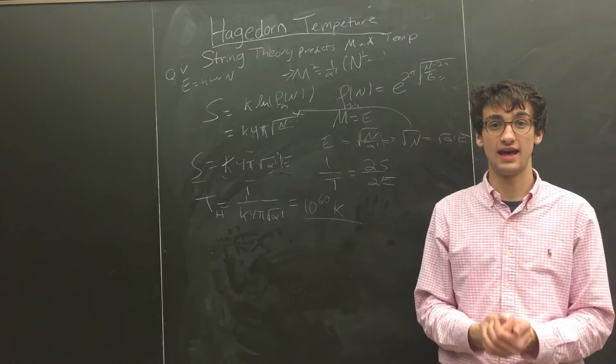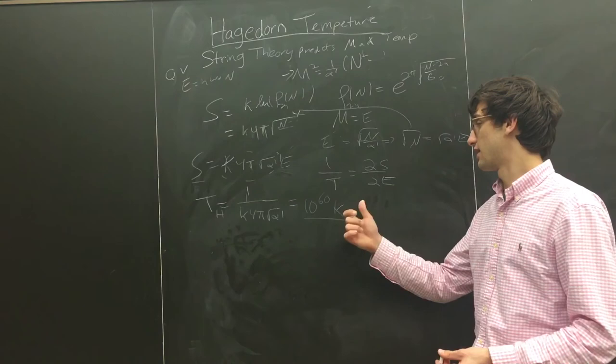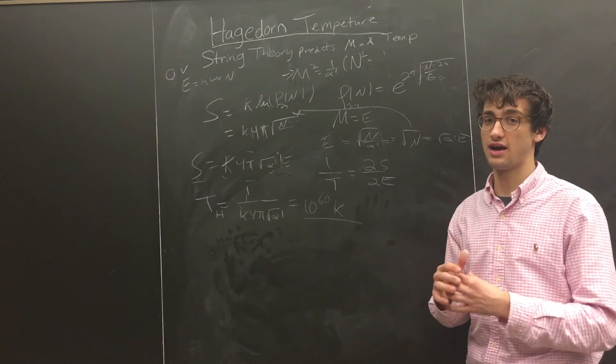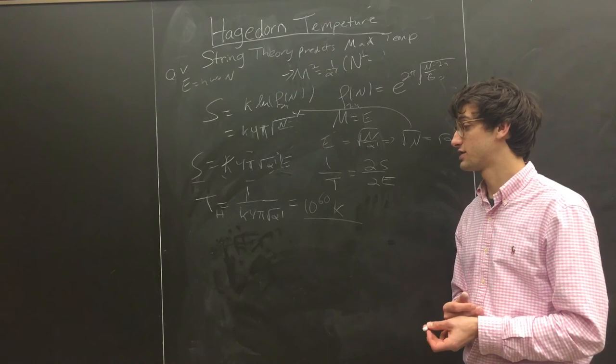One of the things is that the partition function, when you take the energy equals to the Hagedorn temperature, you get infinite amount of energy, so you can't get any higher than this temperature. Yeah, it has very interesting consequences, especially with black holes, which we'll see next time.